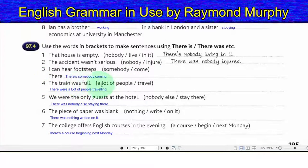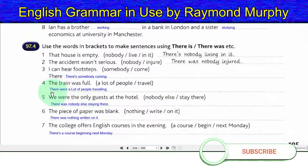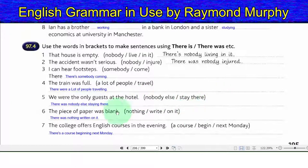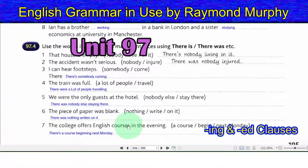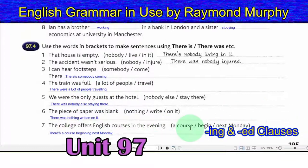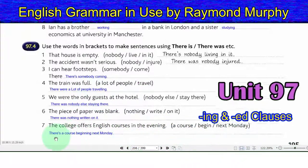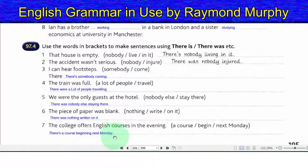Four: the train was full, a lot of people were travelling — there were a lot of people travelling. Five: we were the only guests at the hotel, nobody else stayed there — there was nobody else staying there. Six: the piece of paper was blank, nothing was written on it — there was nothing written on it. Seven: the college offers English courses in the evening, a course begins next Monday — there's a course beginning next Monday.